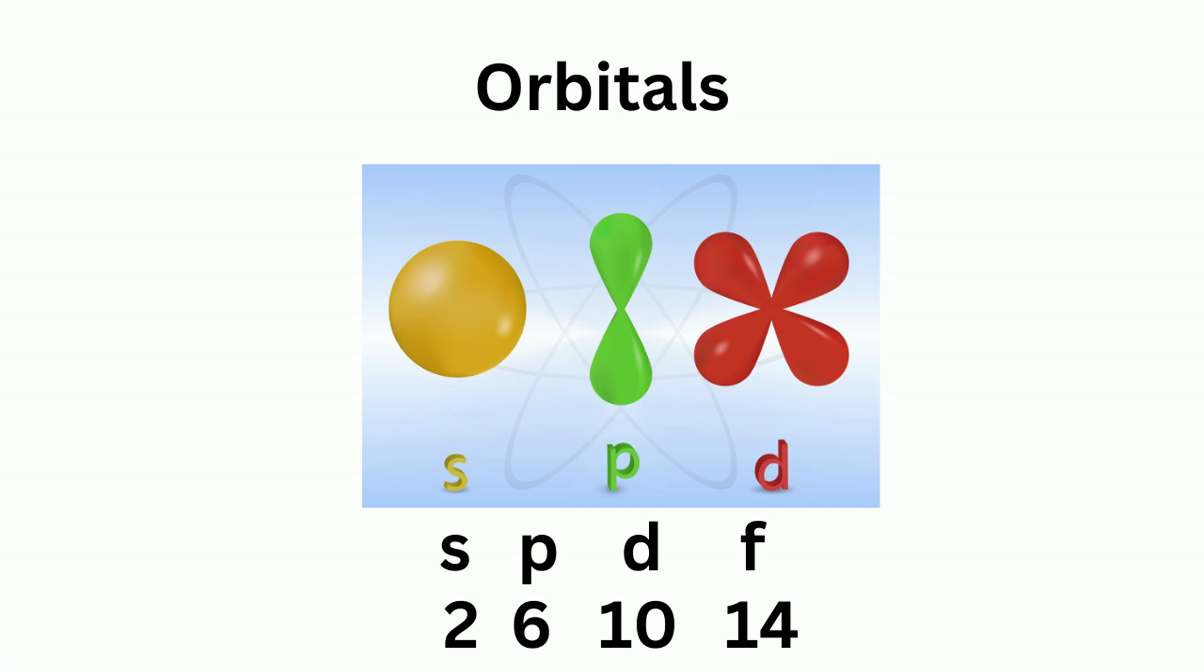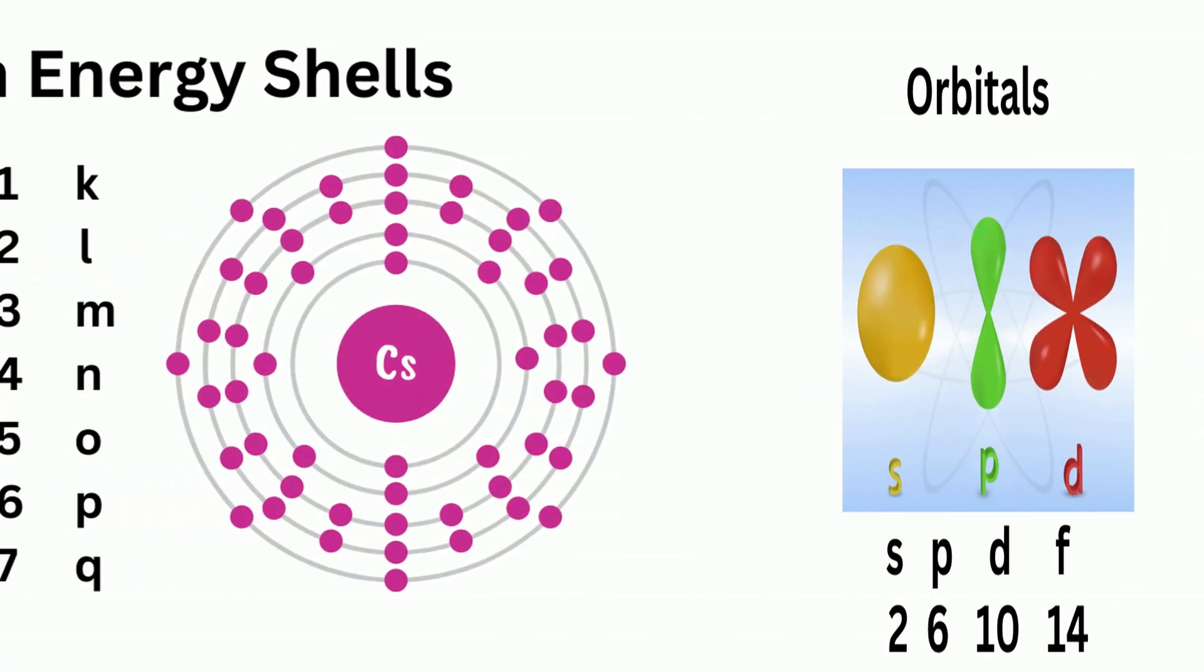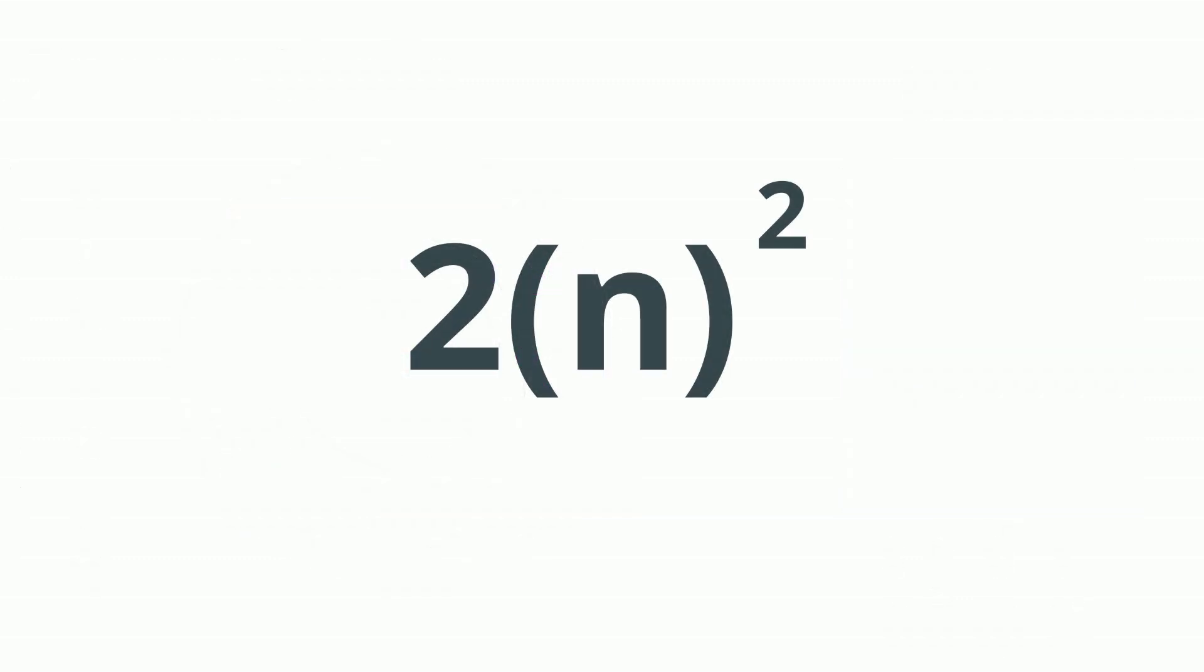Now, once we know this, so you have shells, and then you have orbitals. First, there is a formula that you can use to figure out how many electrons each shell uses, and it's two times n squared, and n is the principal quantum number. So I'll talk about that, and then there's another way using the orbitals. So let's get started on that.